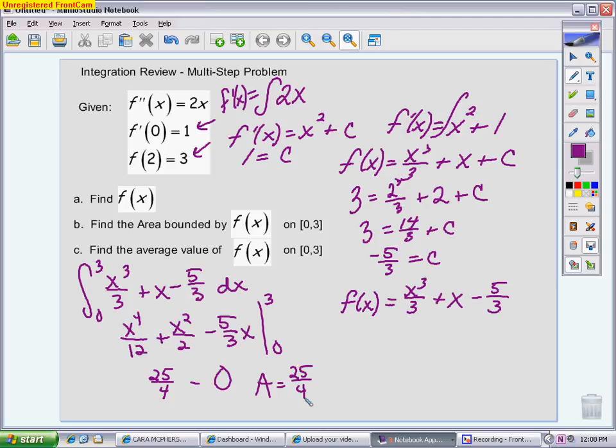Finally, part C. Part C is actually really easy after you do part B, because area is the majority of the work for average value. Average value, in a very simplistic way of writing it, is just the area that you get using your integration divided by your width, which is b minus a.